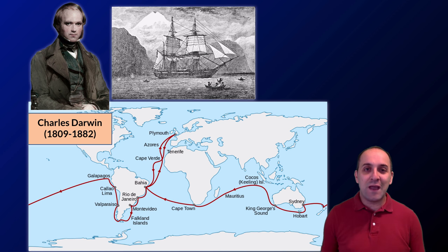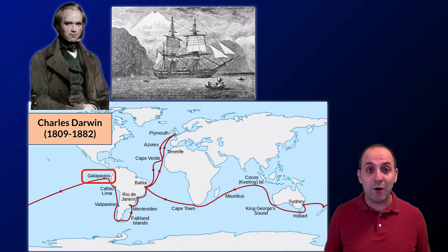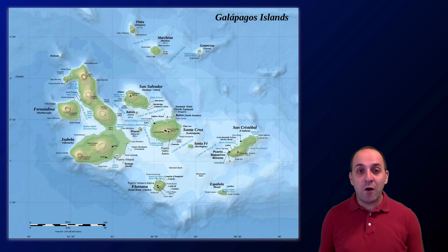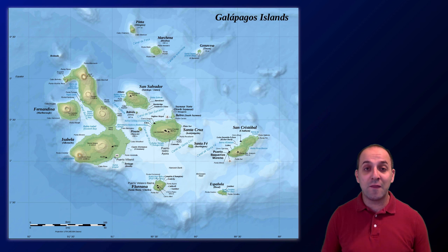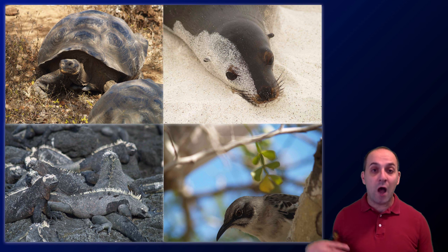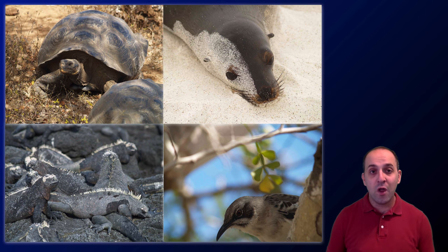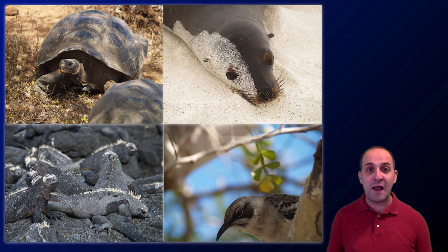One particular location that was really important for the development of Darwin's evolutionary theory was the ship's stop in the Galapagos Islands off the coast of Ecuador in South America. The Galapagos Islands are a volcanic archipelago far enough away from mainland South America that they are inhabited by a lot of unique species found only on that archipelago — giant tortoises, marine iguanas, and species of birds you can't find anywhere else in the world. This turned out to be really important for Darwin's thinking about natural selection.